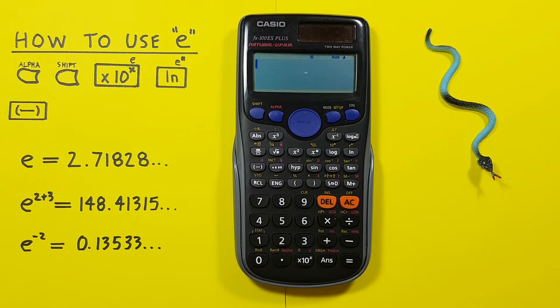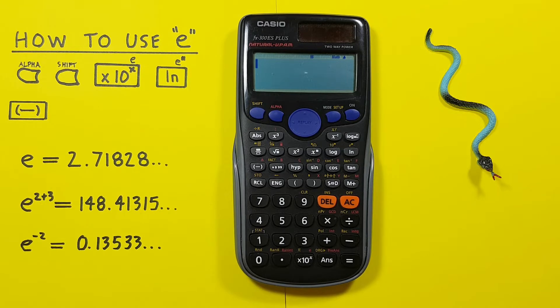Hello and welcome to HD calcs. I'm Rick and in this video we're going to have a look at how we can use the constant E, also known as the natural antilog or the Euler's function, on the Casio FX 300 ES Plus calculator.